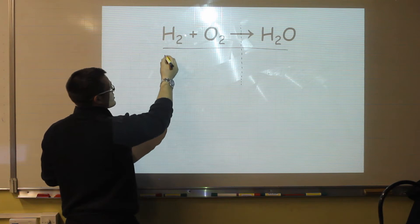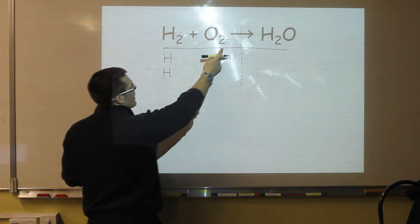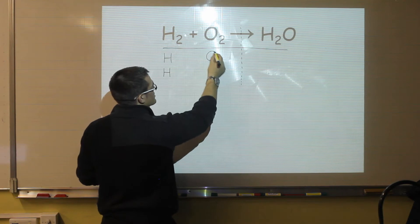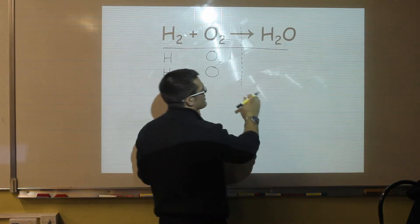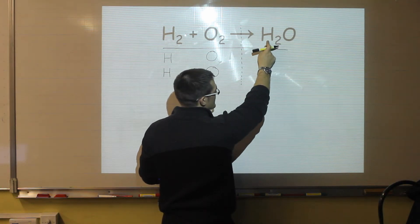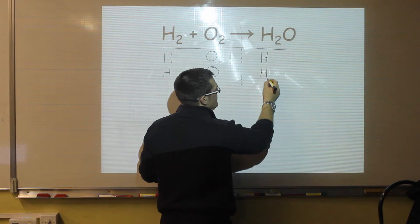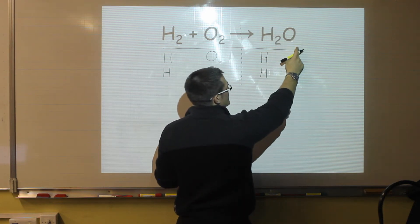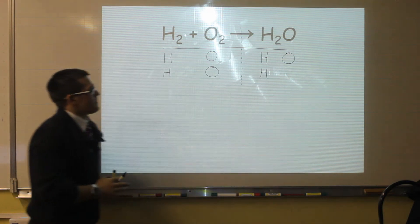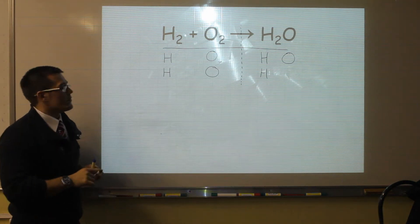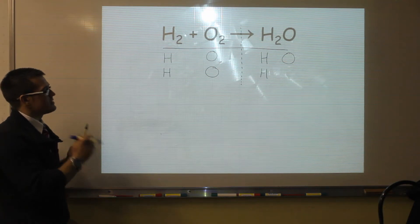Here we have a two next to the hydrogen, so that means I have two hydrogen atoms. I have a two next to the oxygen, so that means I have two oxygen atoms. On this side of the equation, I have a two here, but this is only for the hydrogen, so that means I have two hydrogen atoms. And then there is no number next to the oxygen, so that means we only have one. That's the first step — writing out what we've got.